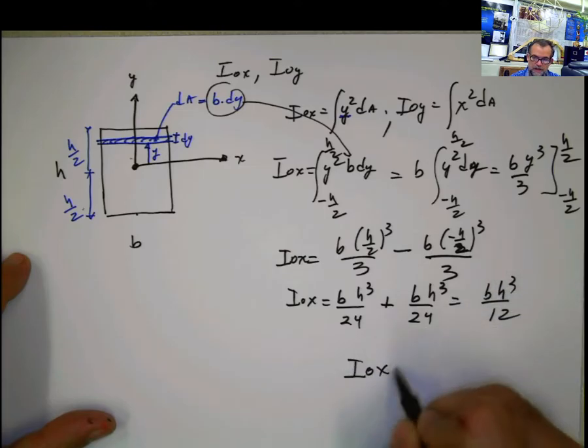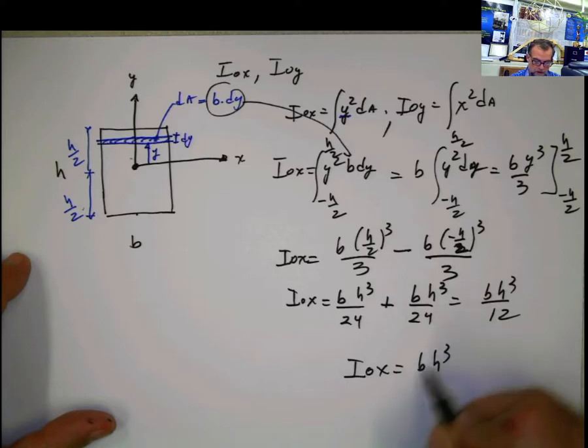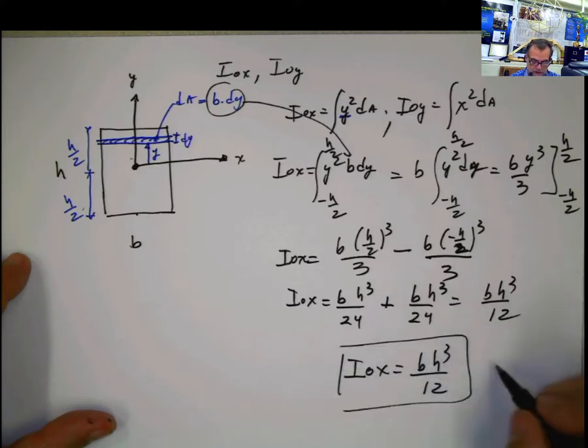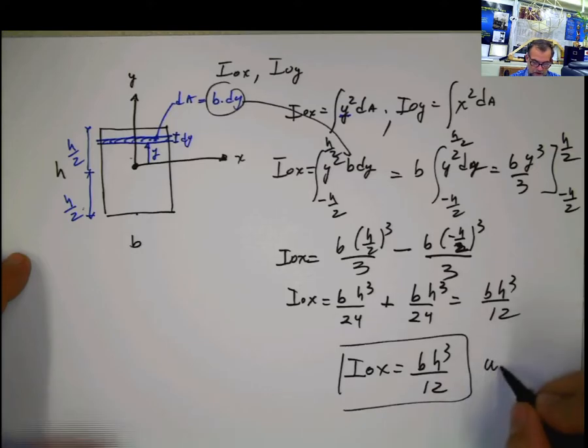Ix equal b h cubed divided by 12. Remember, the units, whatever units we have here, it's going to be units of length, of course,